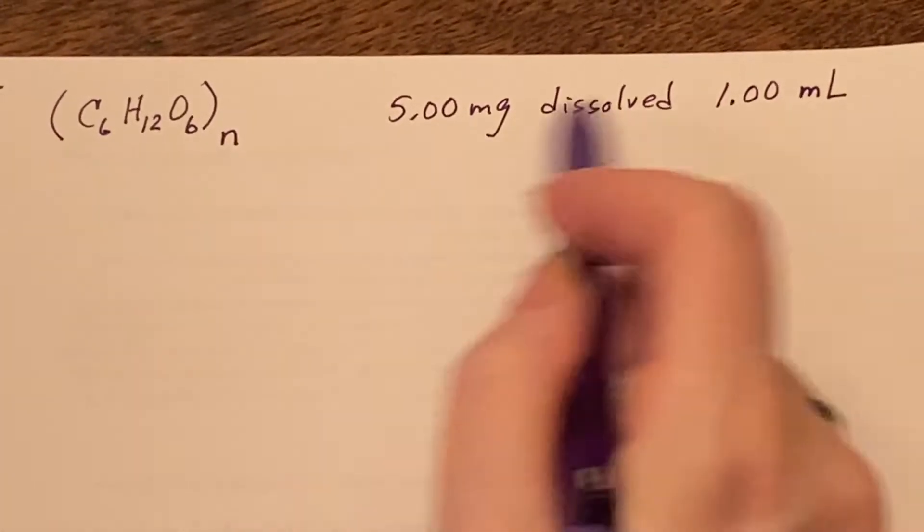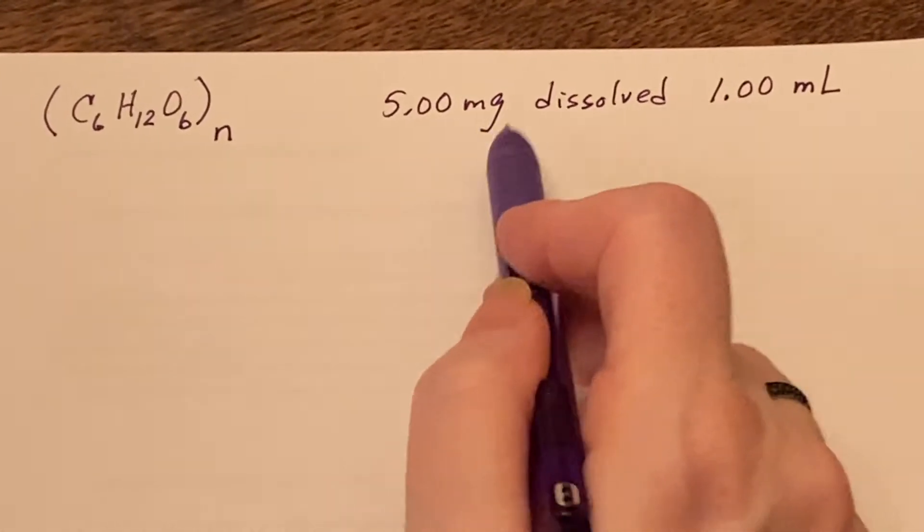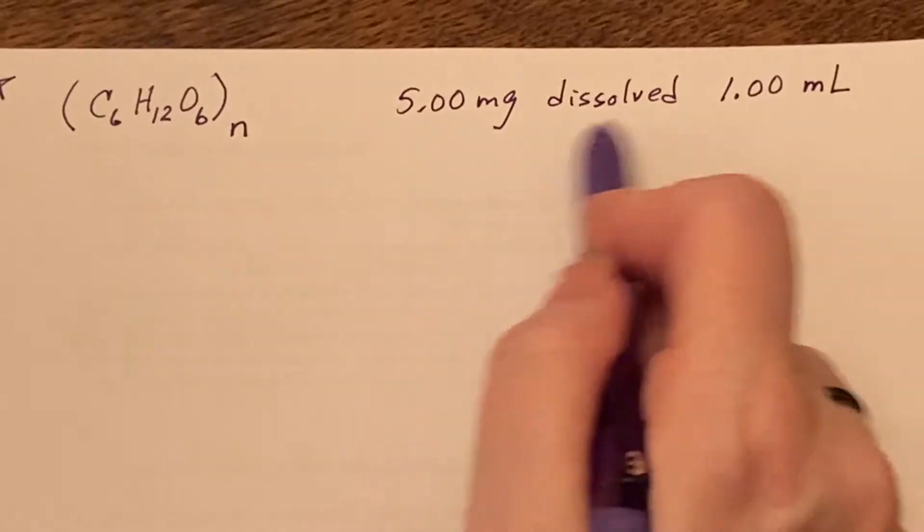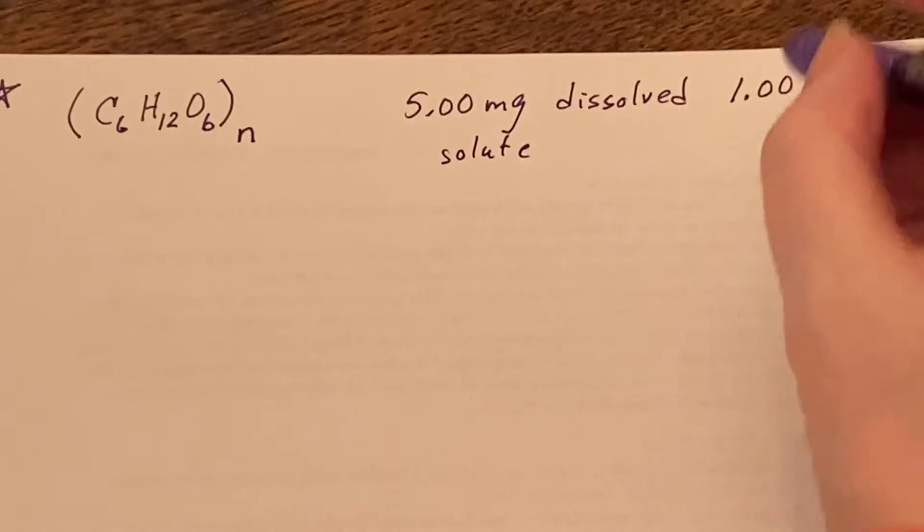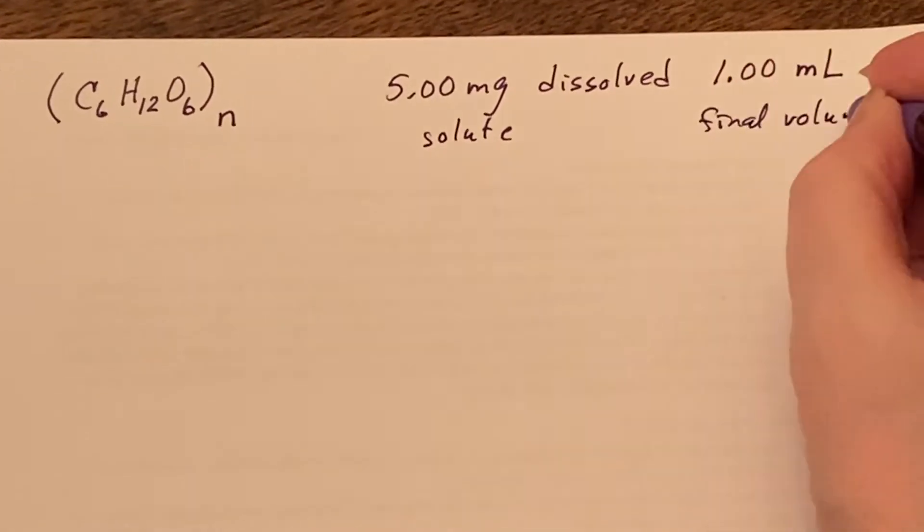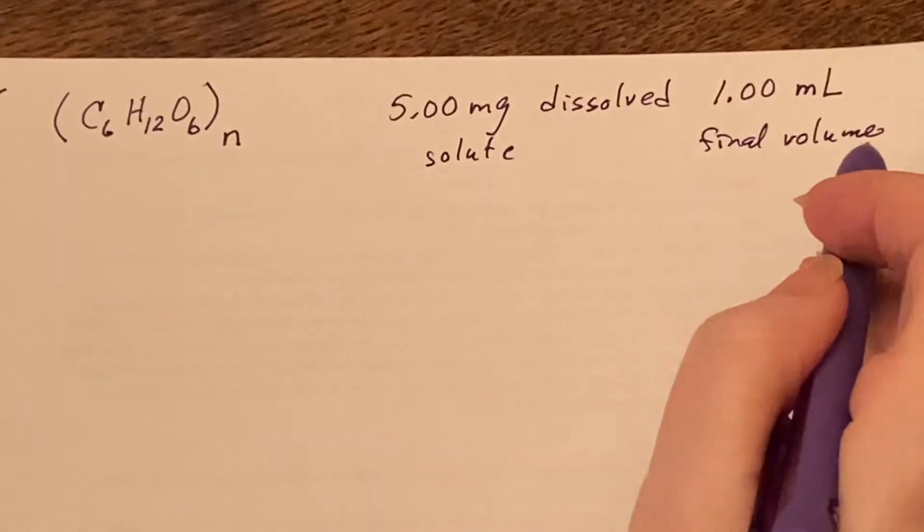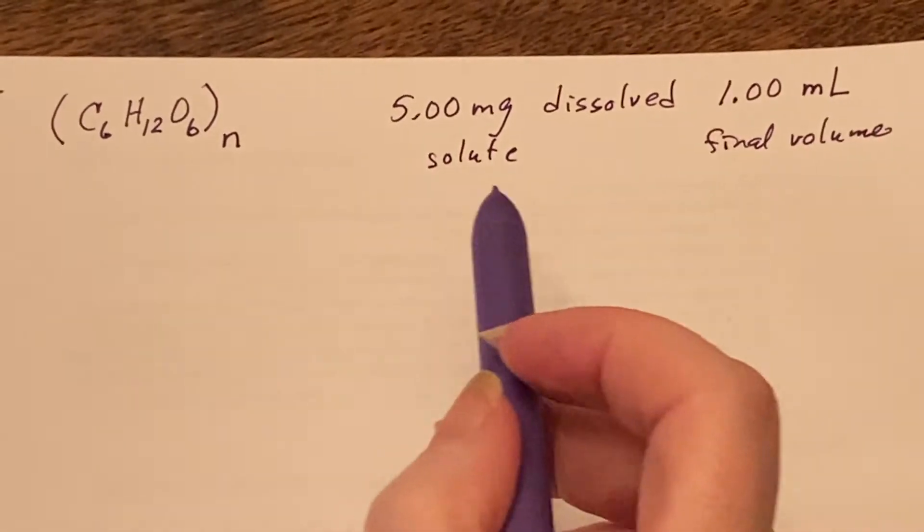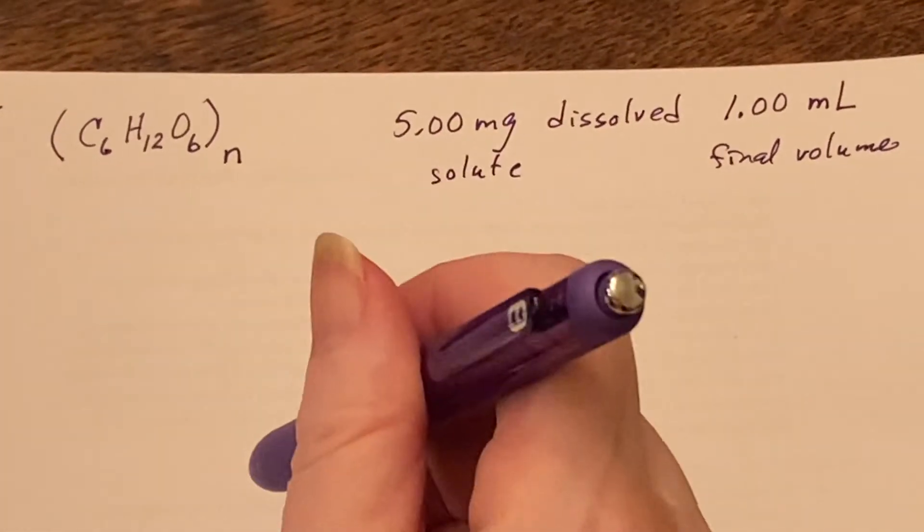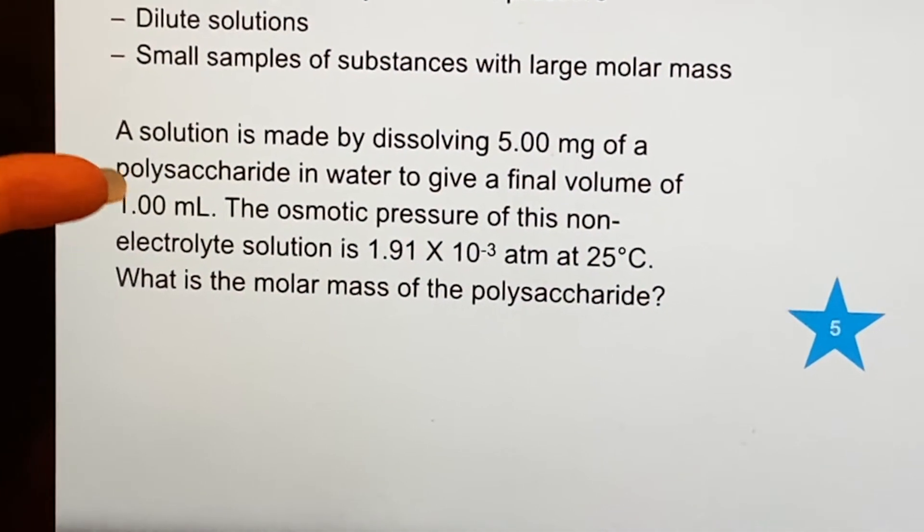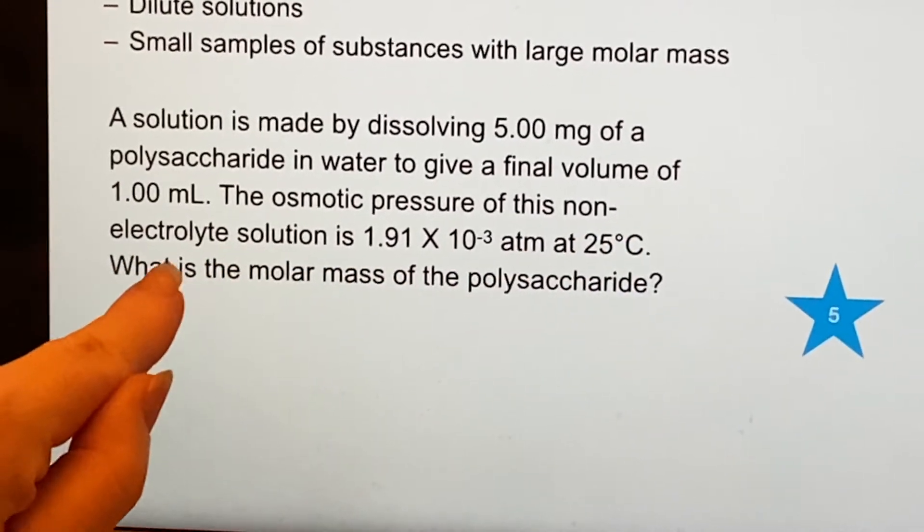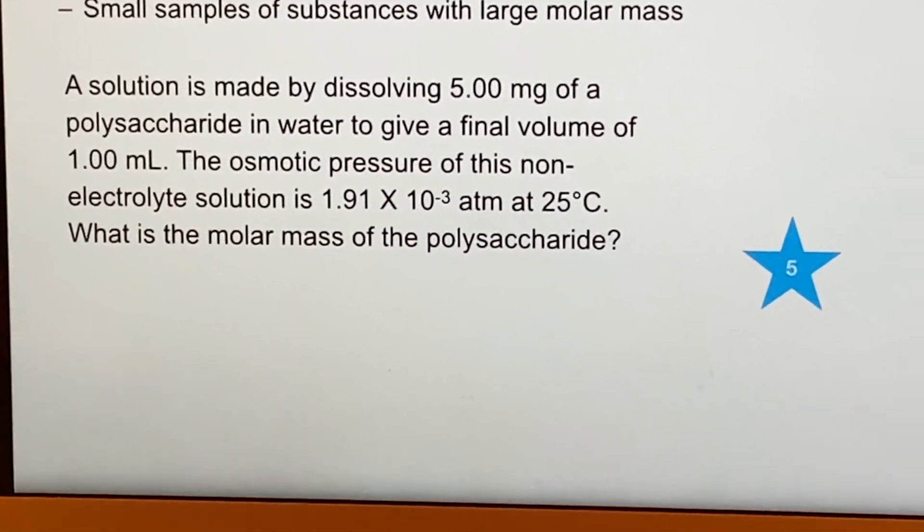I don't know the molarity of this because I don't know what the molar mass of this is, so I can't figure it out. But I do have some indication here that it is a concentration - there's a certain amount of the solute and we have a final volume, so in some sense this is a concentration. It's just not the type that I can use in the formula right now.